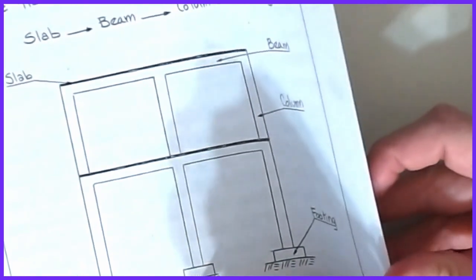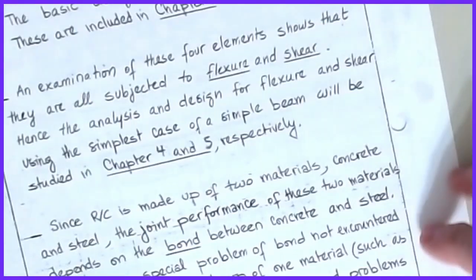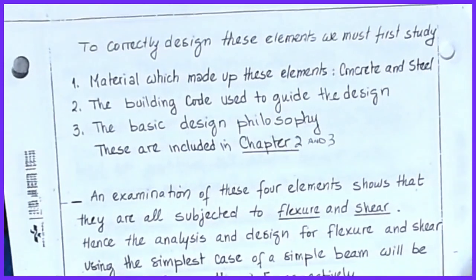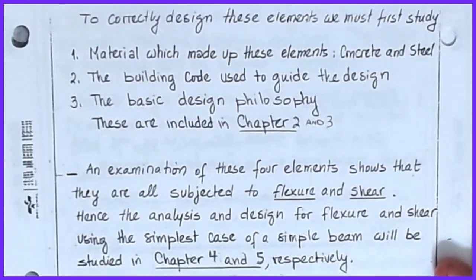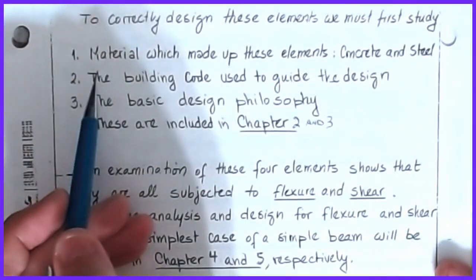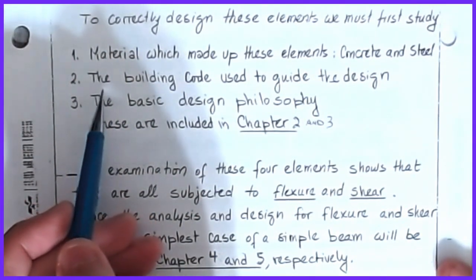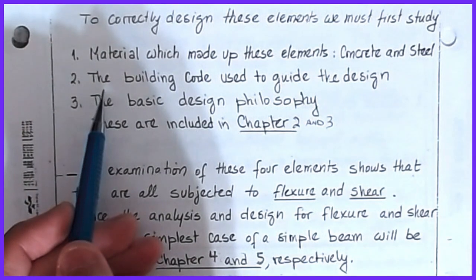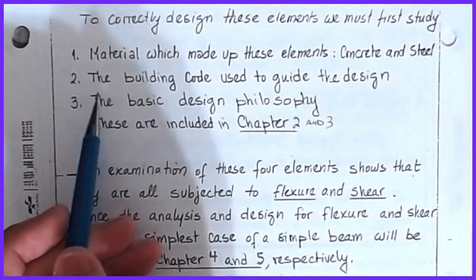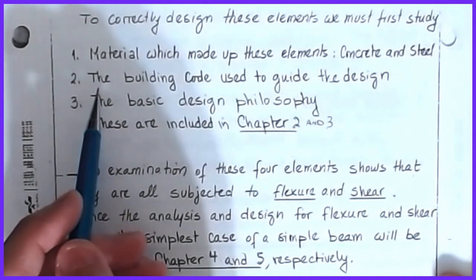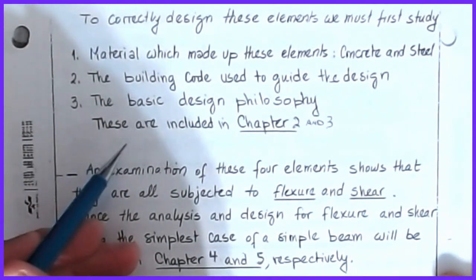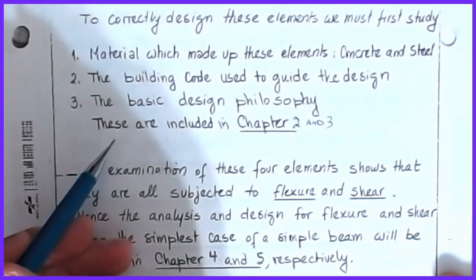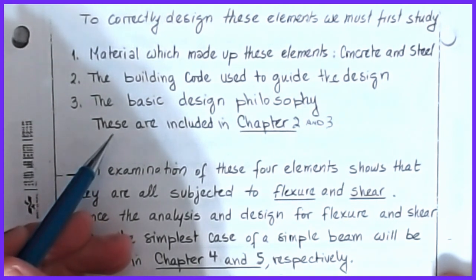The textbook is lined up as follows. In order to be able to design these elements, there are a couple of things we have to do first. We've got to understand the materials and the building code. We'll be using ACI 318, the 2019 edition as our reference, and the notes are calibrated for that. There are some references back to the 2014 edition, but those are typically in places where changes haven't been made between the two versions.